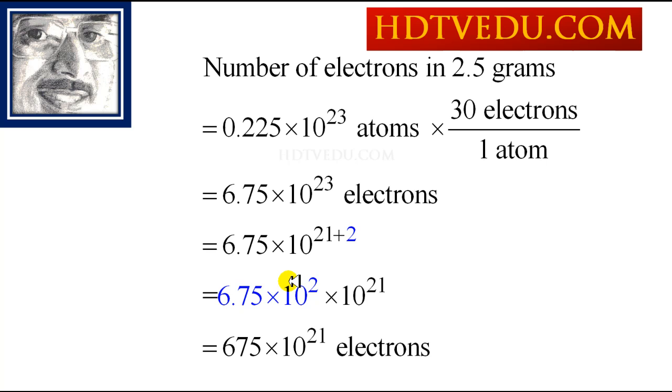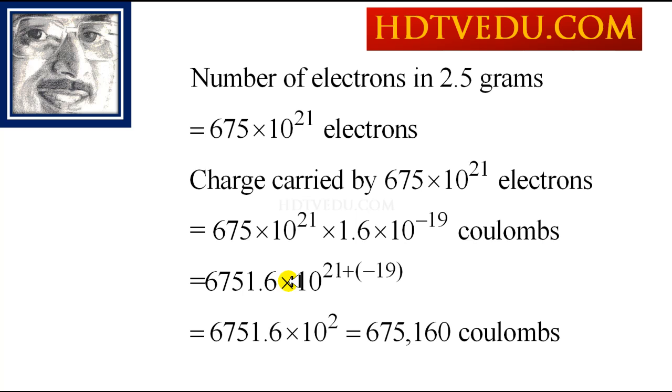So we have 675×10^21 electrons. And now we need to multiply this number by the charge carried by one electron. And what do we get? 675,160 coulombs.